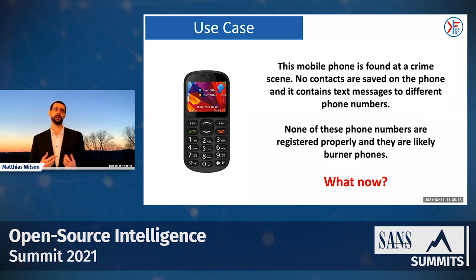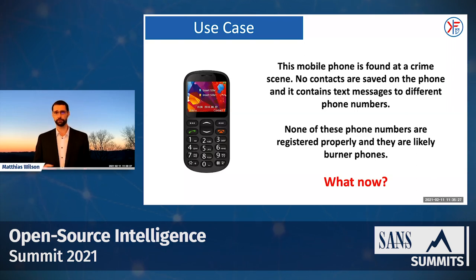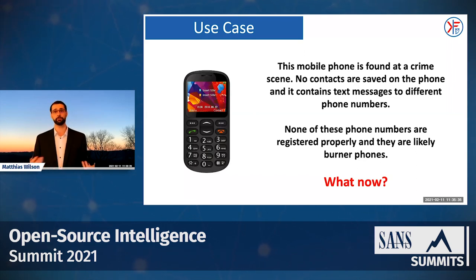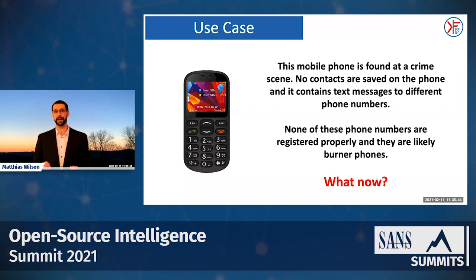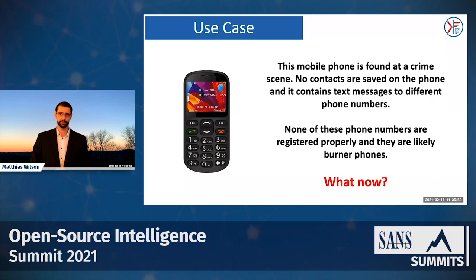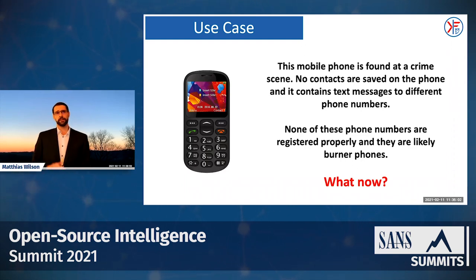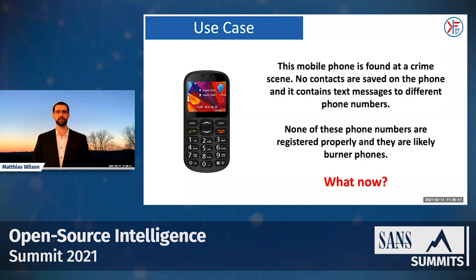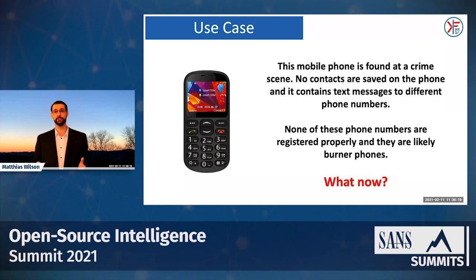Imagine we're in a law enforcement unit and we arrive at a crime scene where there is a phone — a very old phone with buttons. It's not protected by PIN or password, and we can see there are incoming and outgoing calls and text messages, but unfortunately no contacts or names saved on this phone. To figure out how this phone relates to our case, we could send it to digital forensics, but they also don't come back with anything. So what are the next steps? Can we link these phone numbers to any individuals?